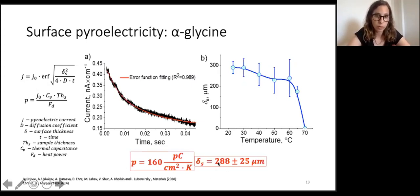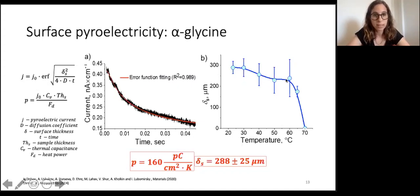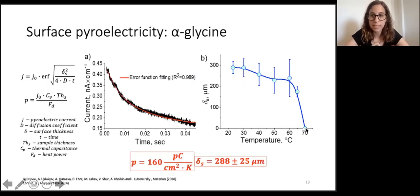At room temperature the pyroelectric coefficient is 160 pC/cm² K. More importantly, we found the surface layer thickness to be around 300 microns. Looking at the temperature dependence of this thickness, it remains fairly constant until 60°C, then rapidly drops and vanishes completely at 70°C. This implies that the near-surface layer is in fact a well-defined phase.